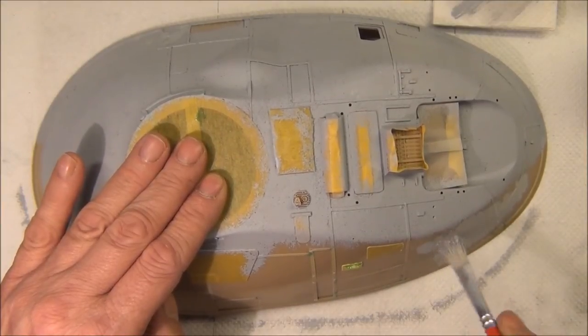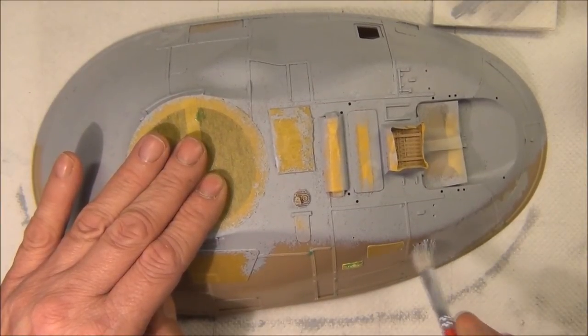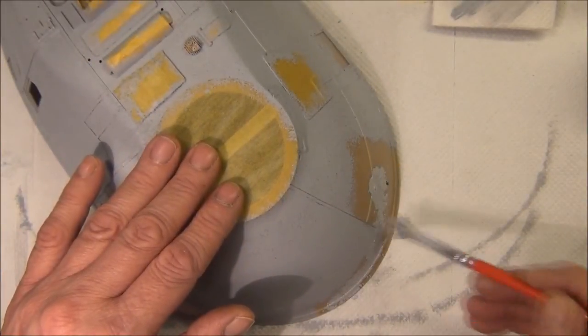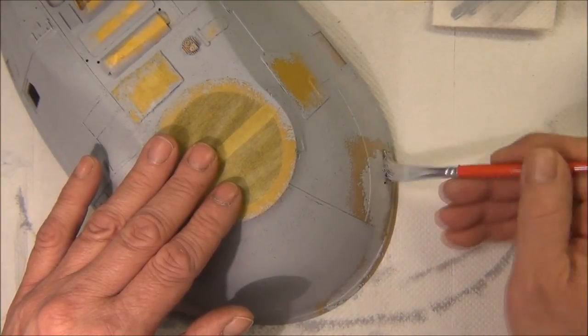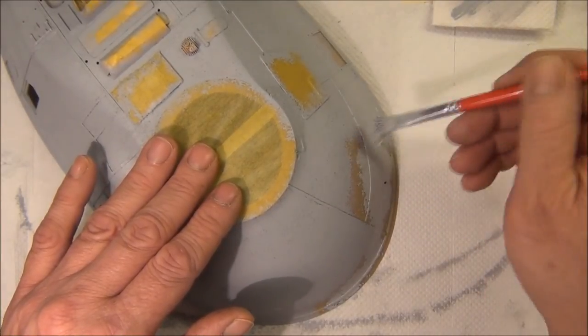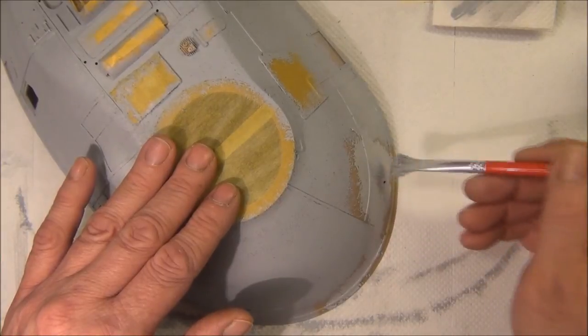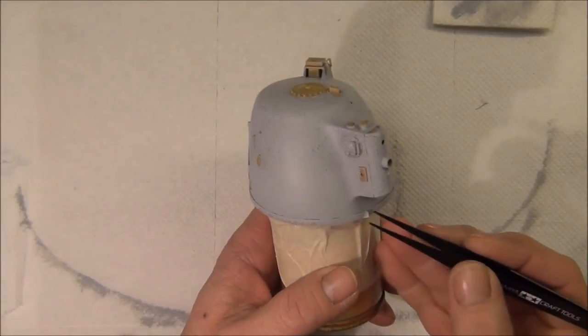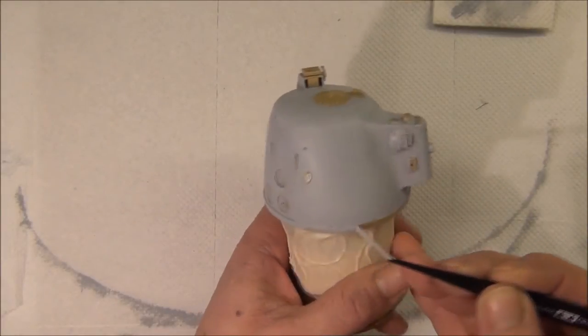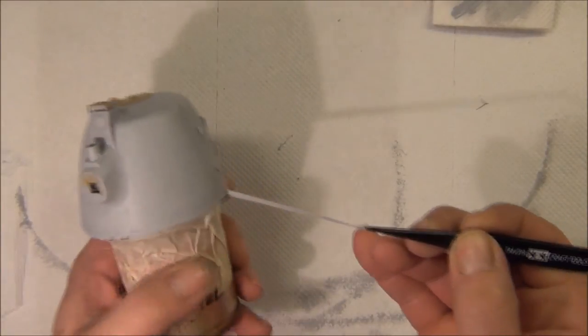As you can see, I'm working from a dry area and spreading and fading back into the pre-textured areas. By the time I finished the hull, the turret was ready to unmask.